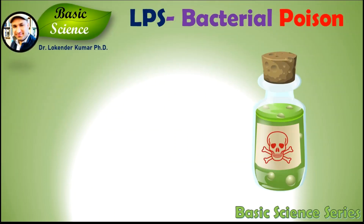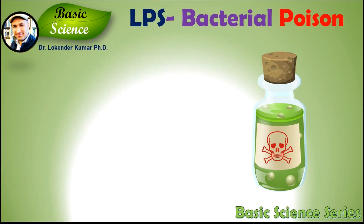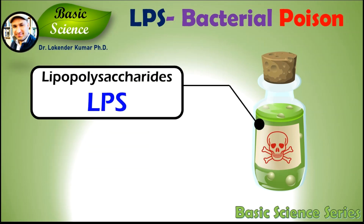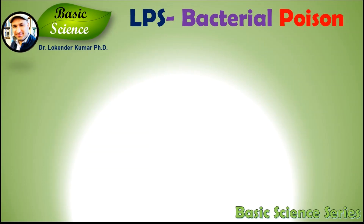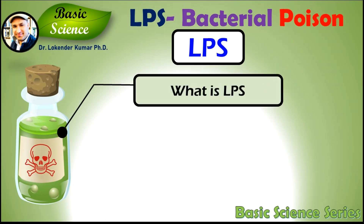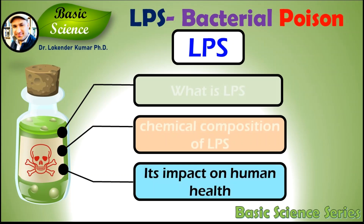In this presentation we will discuss about a highly poisonous material produced by bacterial cells that is very toxic to the human body. The name of the toxin is lipopolysaccharide, in short LPS. We will know what is lipopolysaccharide, what is the chemical composition of LPS, what is the role of bacterial LPS, and we will also discuss in detail about its impact on human health.